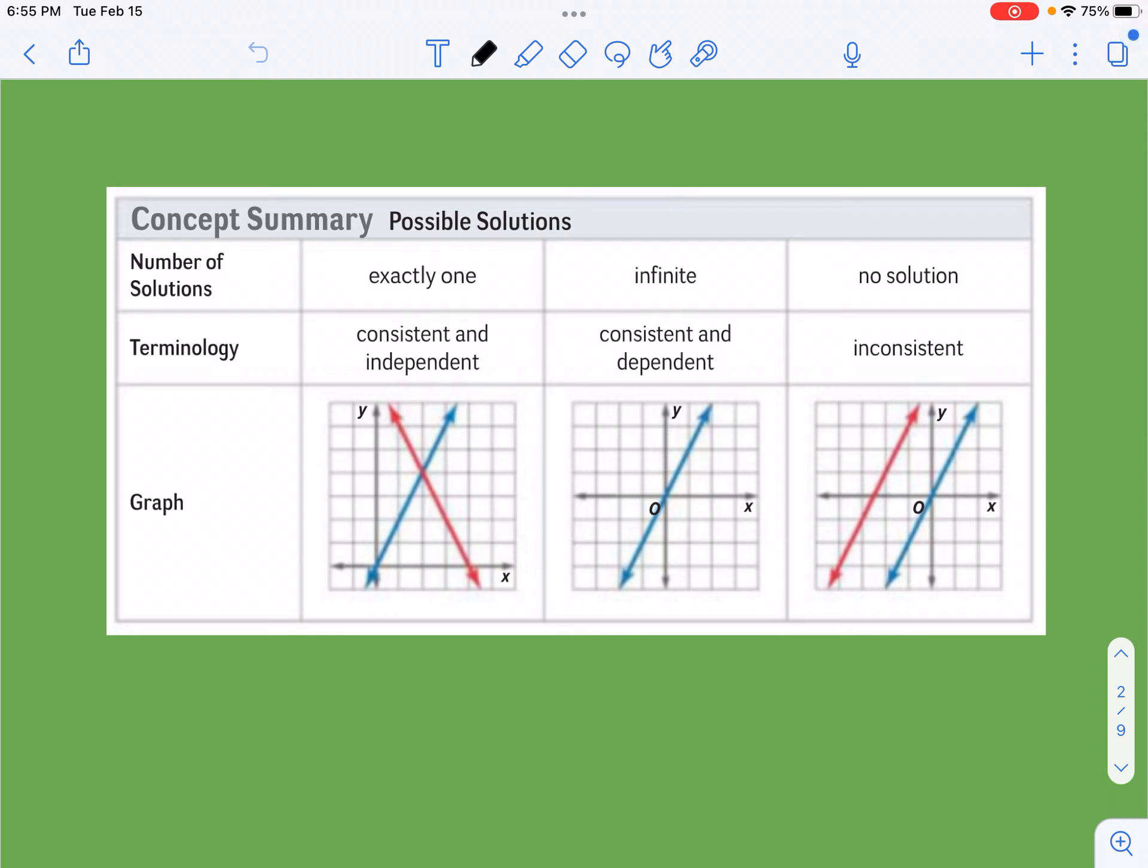Let's take a look at this summary here. There's some language we need to know, some terminology. When we talk about numbers of solutions, you should be familiar with one solution, infinite number of solutions, and no solution from just dealing with algebraic things. This is no different, even though there's two variables. The thing that is different, though, is we have some extra names.